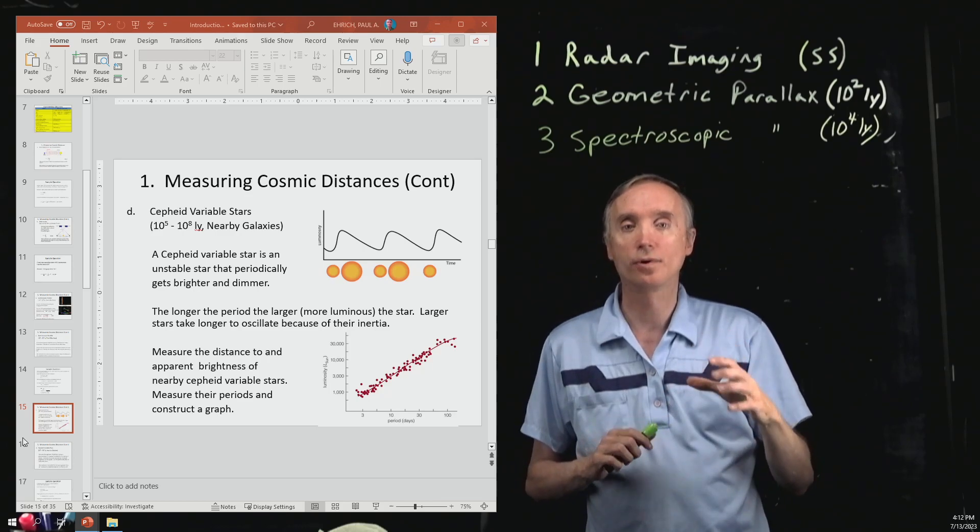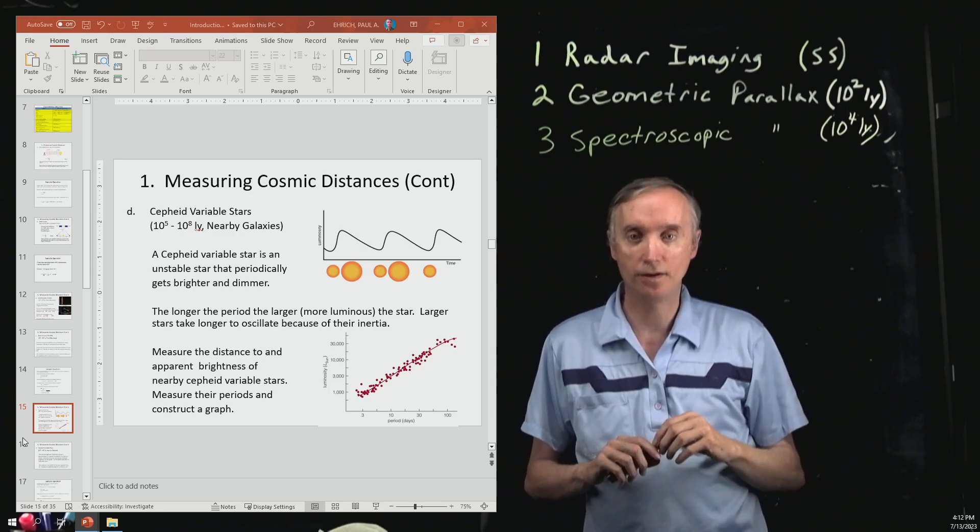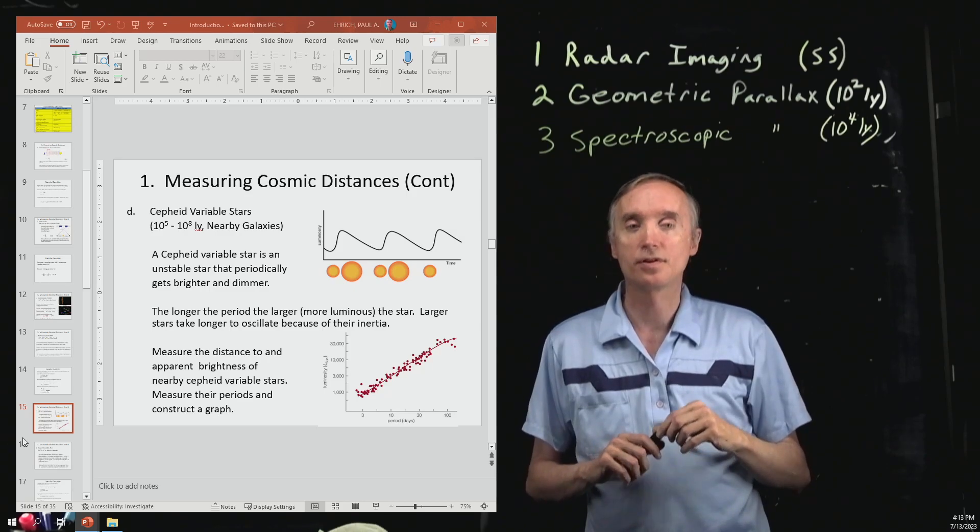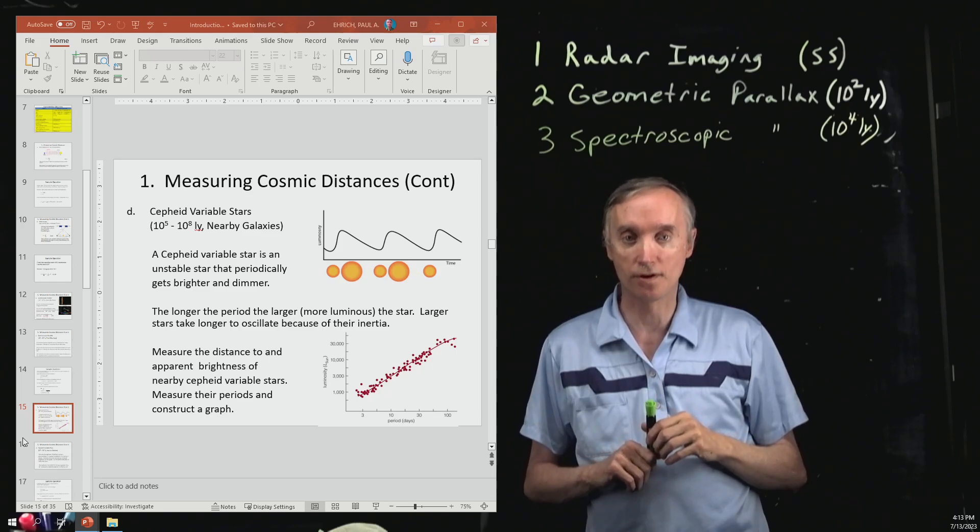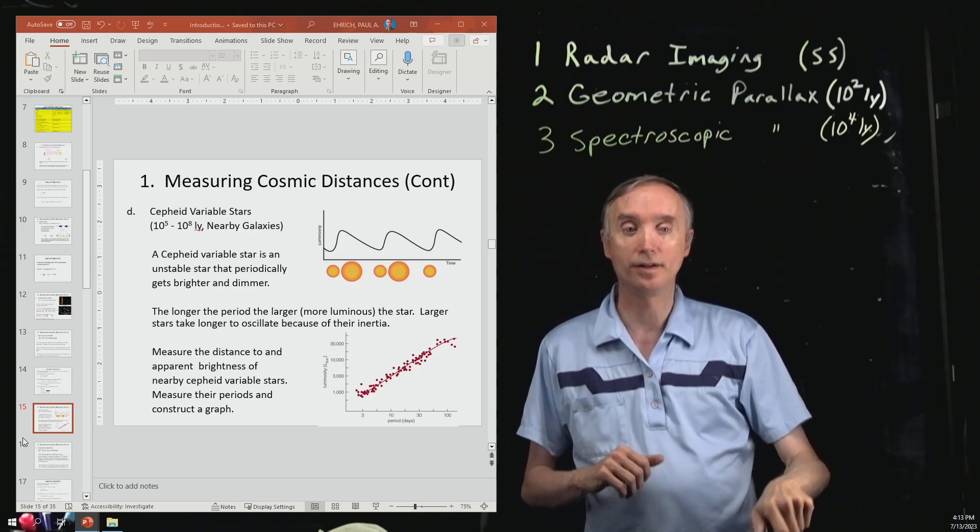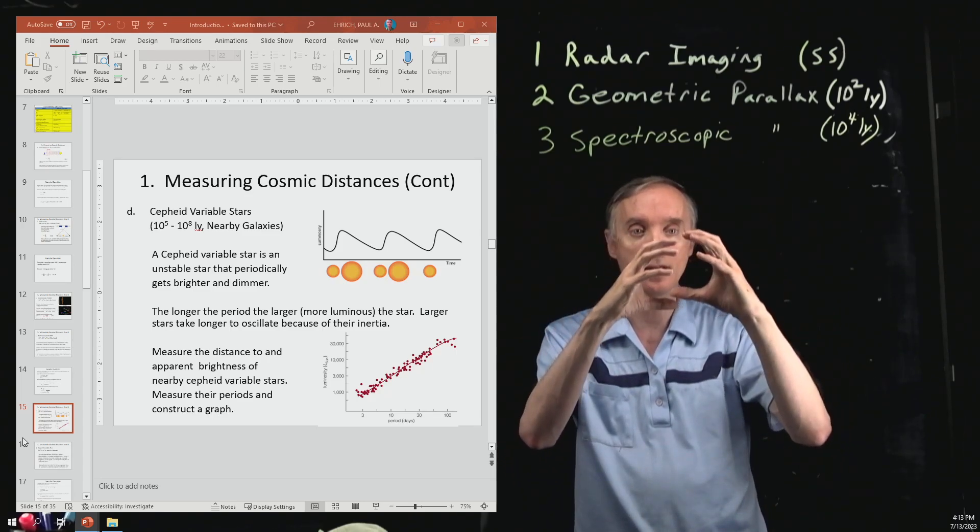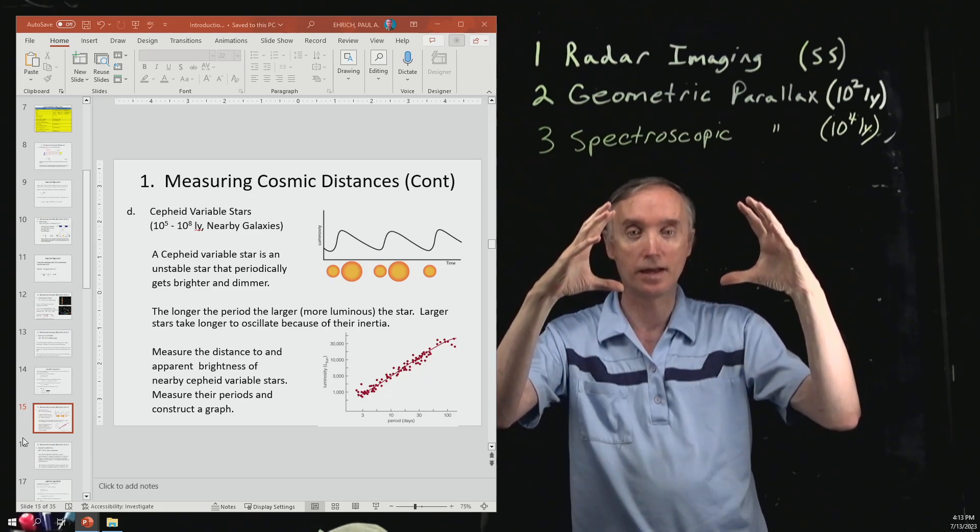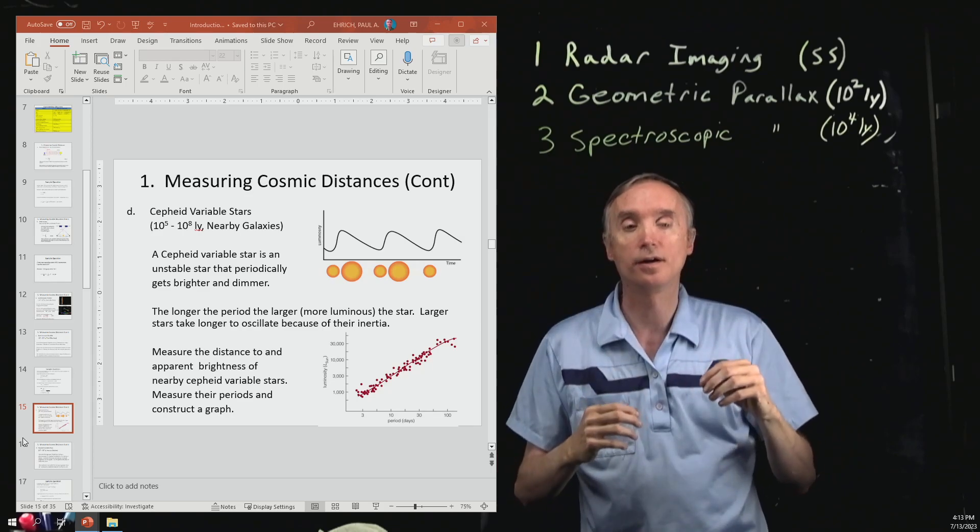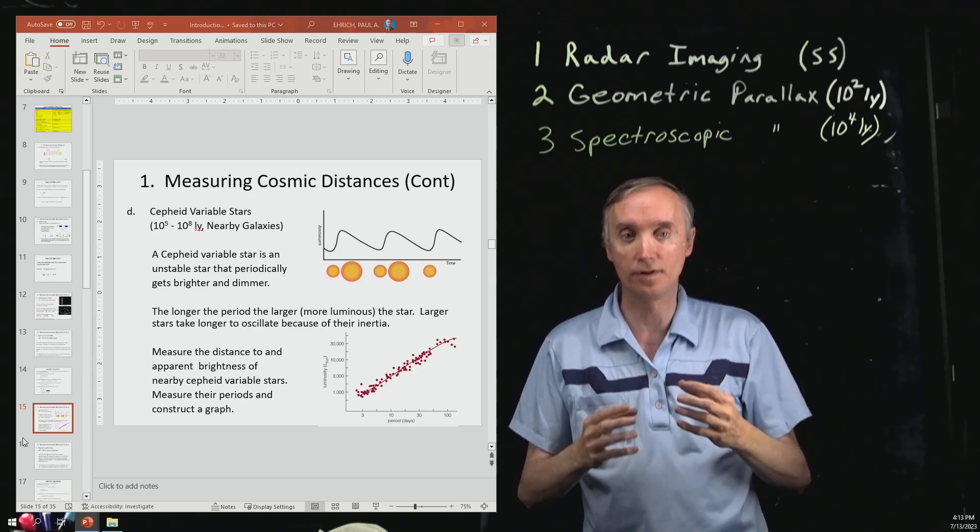So now we're going to use another technique called Cepheid variable stars. A Cepheid variable star is an unstable star that periodically gets smaller in diameter and larger in diameter, and so that's going to change the brightness of this object.